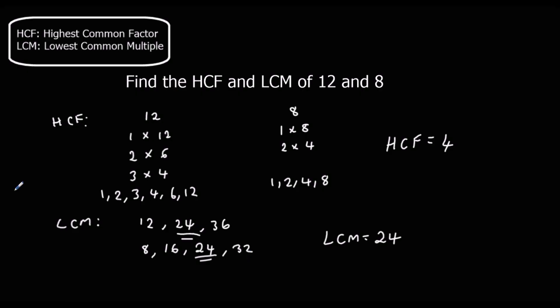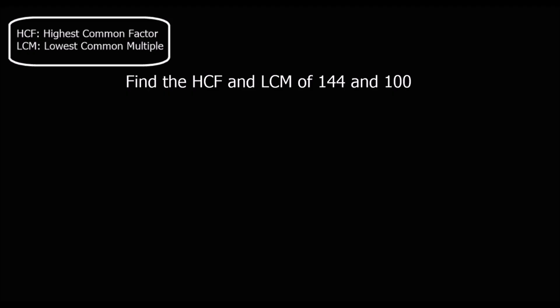This method is good when we've got small numbers. However, when we've got bigger numbers, it's easier to break the numbers down to their prime factors in order to work it out. So what we're going to do is break 144 and 100 down to their prime factors. So we've got 144 and 100.